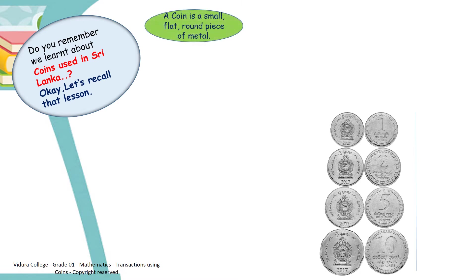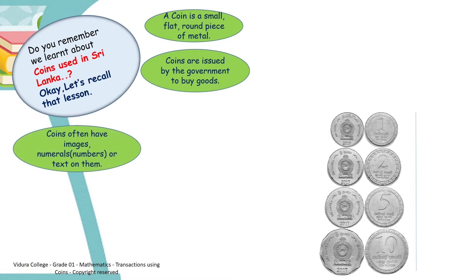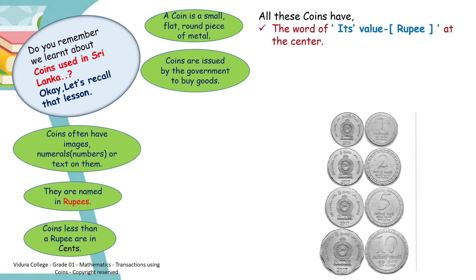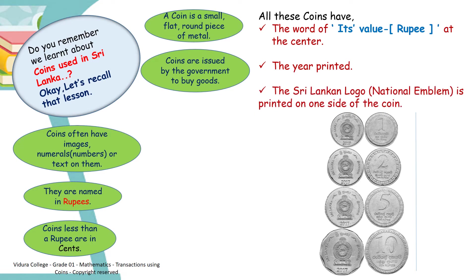A coin is a small flat round piece of metal. Coins are issued by the government to buy goods. Coins often have images and numerals — that mean numbers — or text on them. They are named in rupees. Coins less than a rupee are in cents. All these coins have the word of their value, the word rupee, and the year printed at the centre, and the Sri Lankan national emblem is printed on one side of the coin.